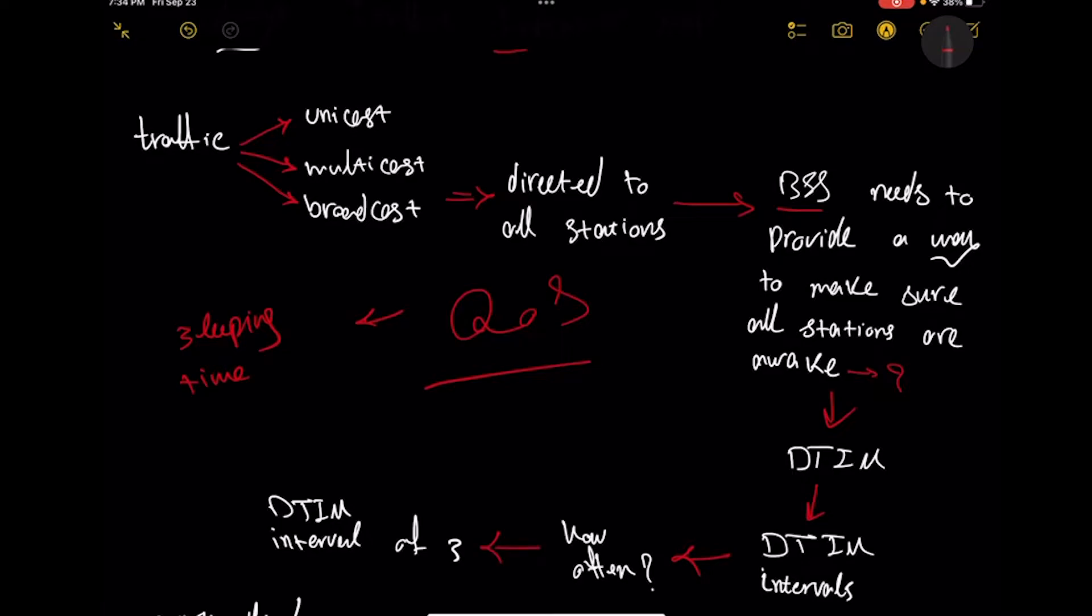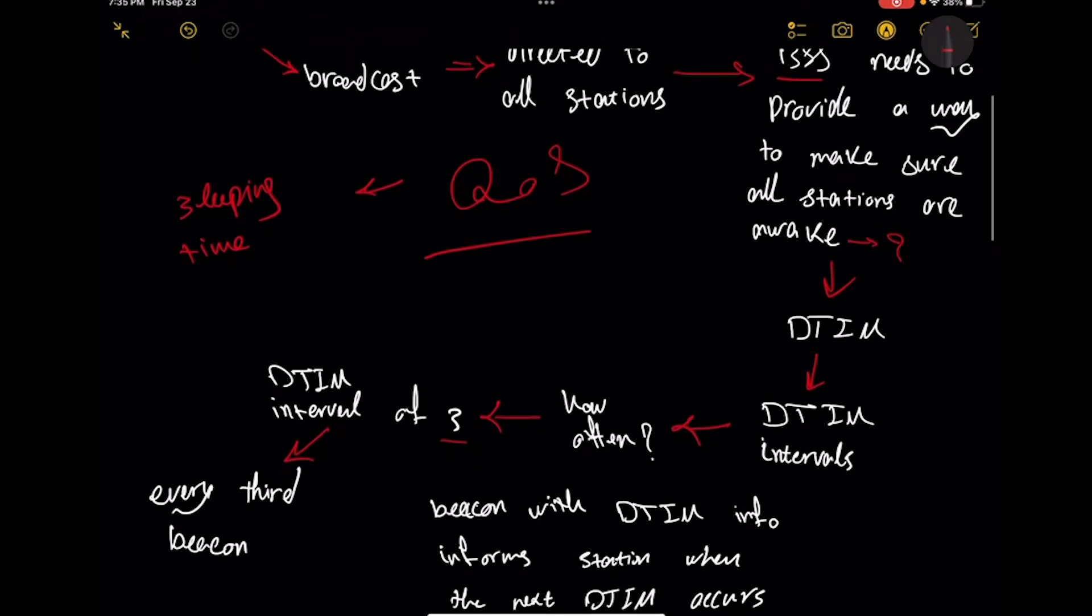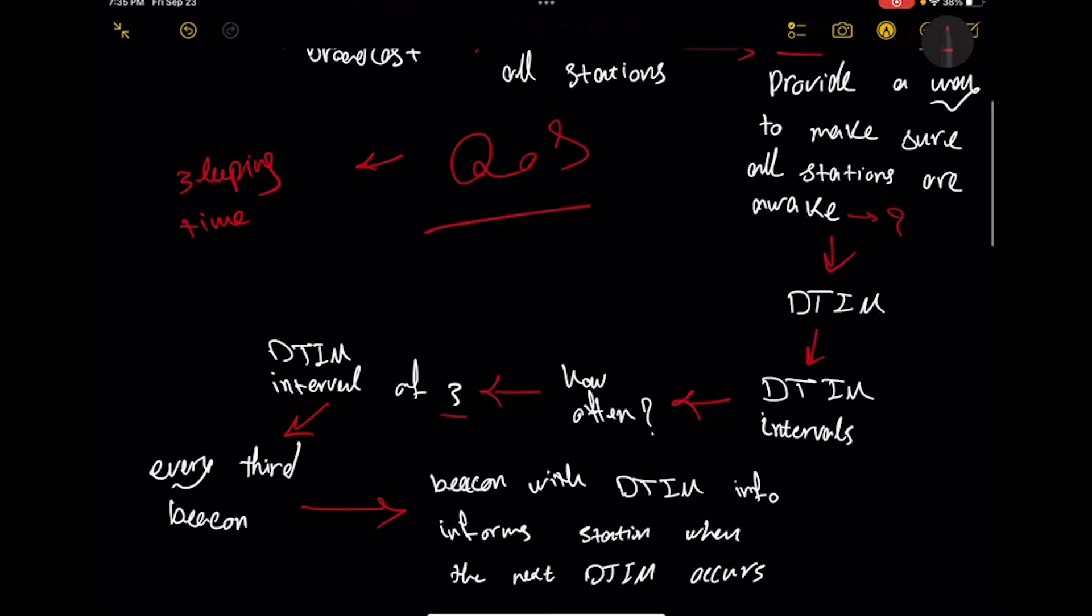For example, DTIM interval of three means every third beacon it can be on, and a beacon with DTIM information informs the stations when the next DTIM occurs.